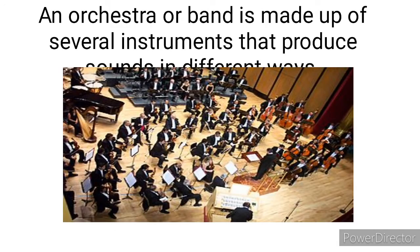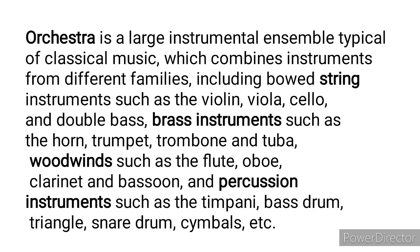We then moved to musical instruments. We talked about an orchestra as a band made up of several instruments that produce music. An orchestra is a large ensemble typically of classical music which combines instruments from different families: string instruments like violin, cello, and viola; brass instruments such as horn, trumpet, trombone, and tuba; wind instruments such as flute, oboe, clarinet, and bassoon; and finally percussion instruments including timpani, bass drum, triangle, snare drum, and cymbals.